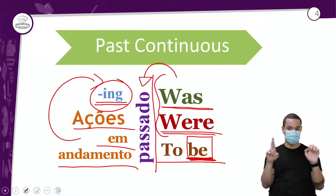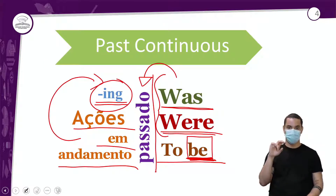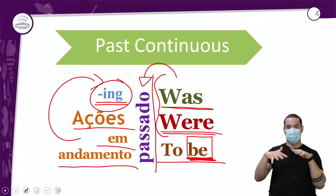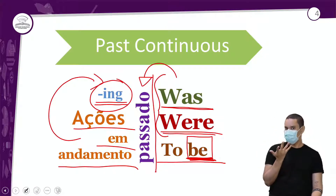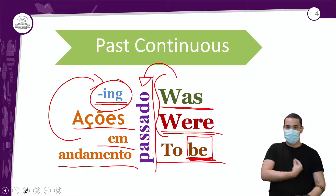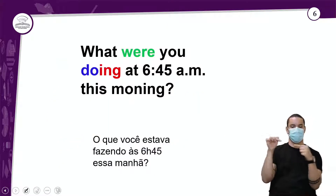Aqui no past continuous, o verbo to be só vai ser traduzido como 'estar', por conta da situação de falar sobre ações que estavam em andamento. Então você não pode falar 'eu sou comendo' ou 'eu era comendo em casa' — não faz sentido. A tradução correta é 'eu estava' — essa vai ser a tradução do verbo to be no passado contínuo.